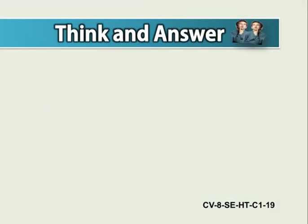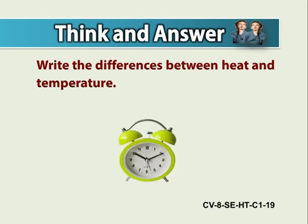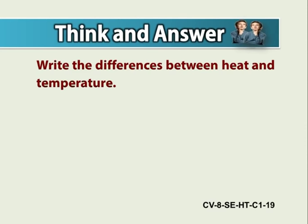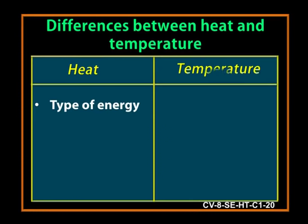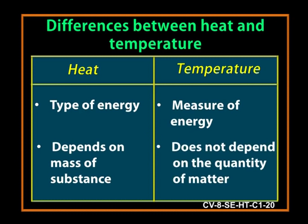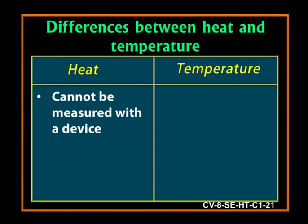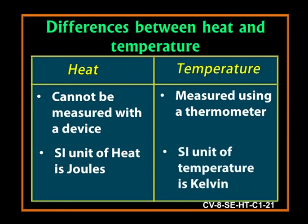Children, now think and answer. Write the differences between heat and temperature. The answer is heat is a type of energy, but temperature is the measure of thermal energy. Heat depends on mass of the substance. However, temperature does not depend on the quantity of matter. Heat cannot be measured with a device, whereas temperature is measured using a thermometer. The SI unit of heat is Joules, whereas the SI unit of temperature is Kelvin.